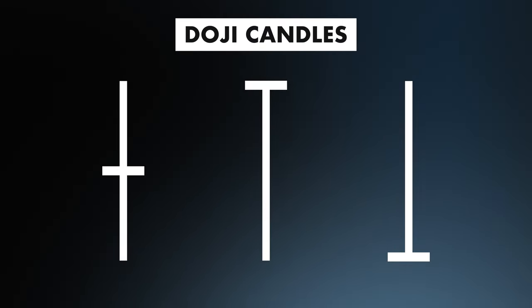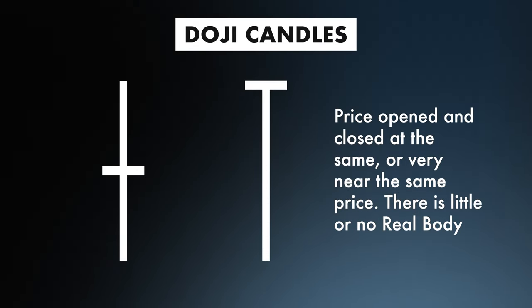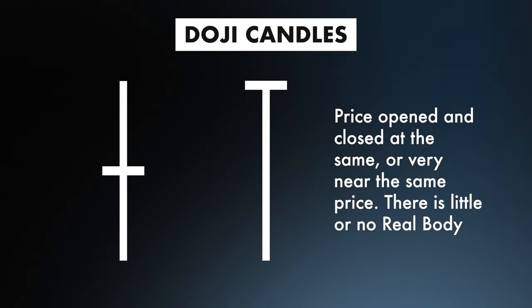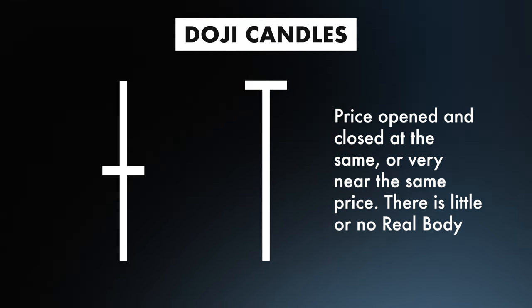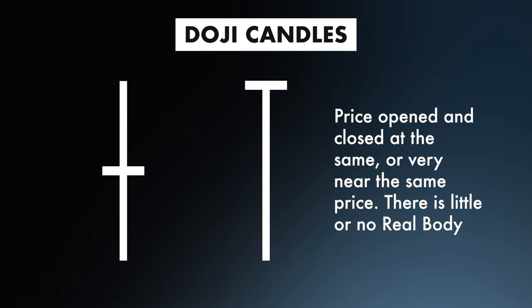You will see another type of candle on your chart — they look like this. As you can see, these candles have little or no body. They are known as doji candles. What a doji candle is telling you is that price opened and closed at the same, or very near to the same price. So although the price may have moved quite significantly during the time period, it closed back on or very near to its opening price.